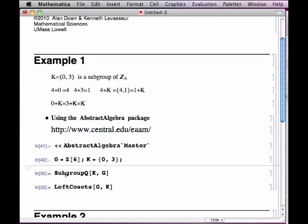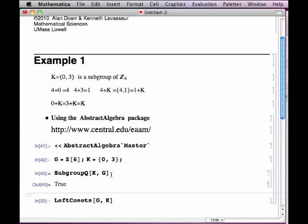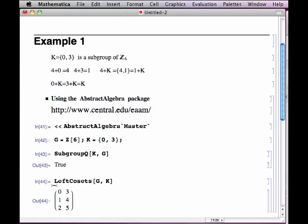To find those, we can verify first that K is indeed a subgroup, and you do need to start with a subgroup to get proper cosets, and the left cosets are generated this way. And you get the three rows, and the output represent the three cosets of K.